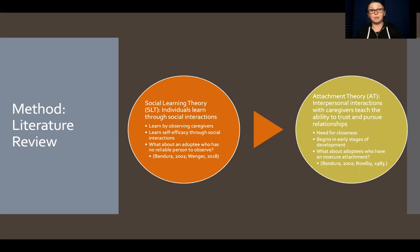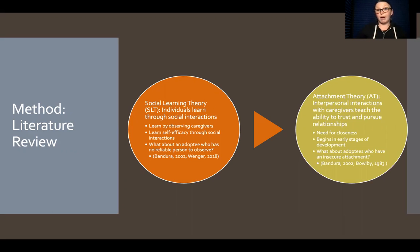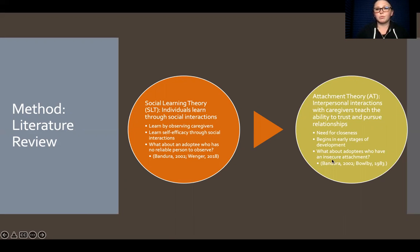Bandura in 2002 and Wenger in 2018 formulated social learning theory and the concept of self-efficacy — how we learn through our caregivers. I also use attachment theory to build off social learning theory. Attachment theory argues that our interpersonal interactions with caregivers teach us our ability to trust other people. This comes from our need to be close to one another and develops from birth onward. What about adoptees who don't develop that social learning and instead develop insecure attachments? These are my guiding questions. This was proposed by Bandura in 2002 and Bowlby in 1983.